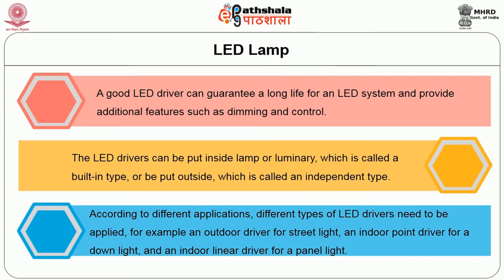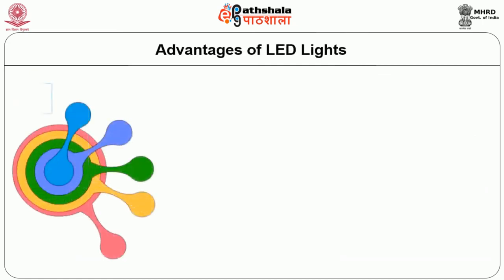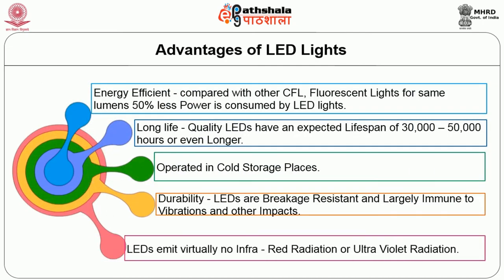Advantages of LED light: energy efficiency compared with CFL and fluorescent lamps — for the same lumens, LED lights consume 50% of the power. Long life quality: LEDs have an expected lifespan of 30,000 to 50,000 hours or even longer. They can operate in cold storage places. Durability: LEDs are highly durable, breakage resistant, and largely immune to vibrations and other impacts. LEDs emit virtually no infrared radiation or ultraviolet radiation.